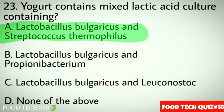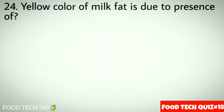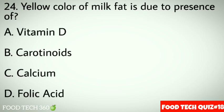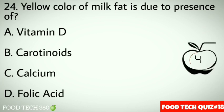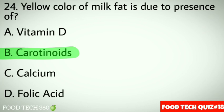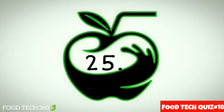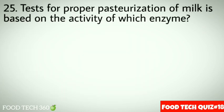Question 23: Yogurt contains mixed lactic acid culture containing. Options: A. Lactobacillus bulgaricus and Streptococcus thermophilus, B. Lactobacillus bulgaricus and Propionibacterium, C. Lactobacillus bulgaricus and Leuconostoc, D. None of the above. Correct answer: A. Lactobacillus bulgaricus and Streptococcus thermophilus. Question 24: Yellow color of milk fat is due to the presence of. Options: A. Vitamin D, B. Carotenoids, C. Calcium, D. Folic acid. Correct answer: B. Carotenoids.